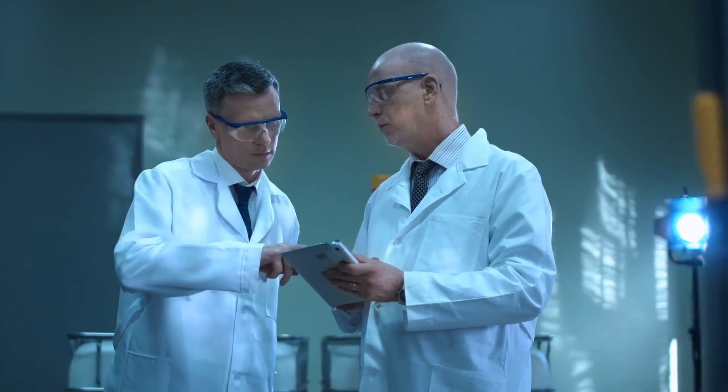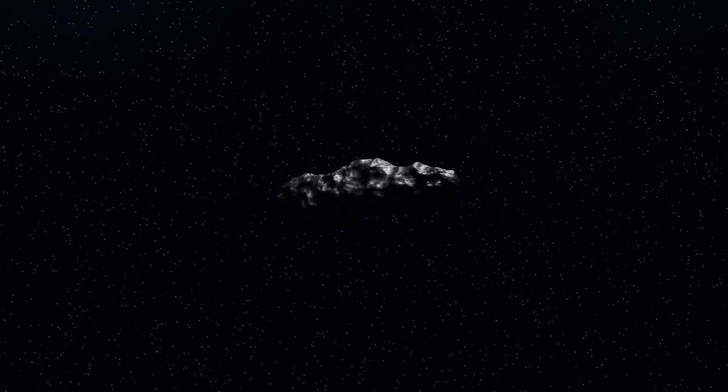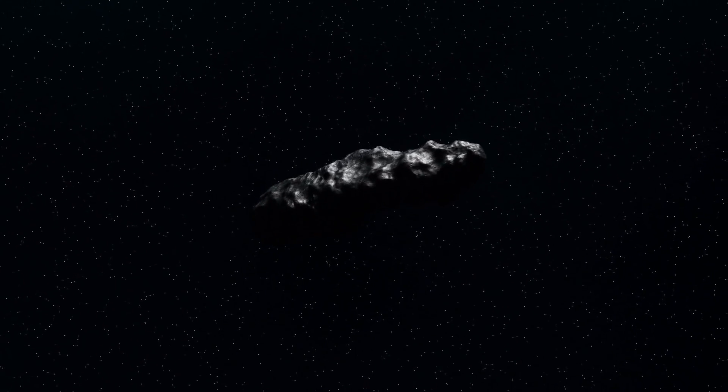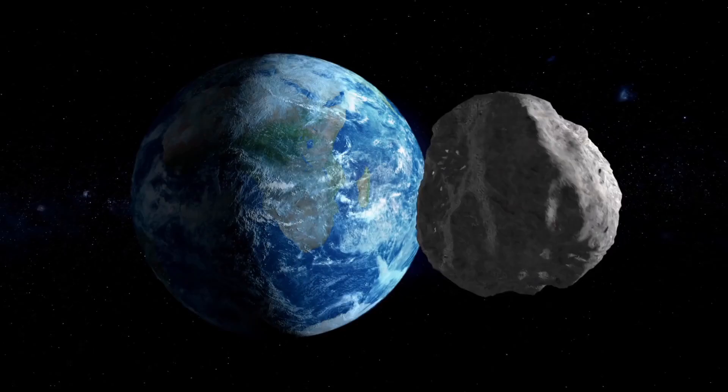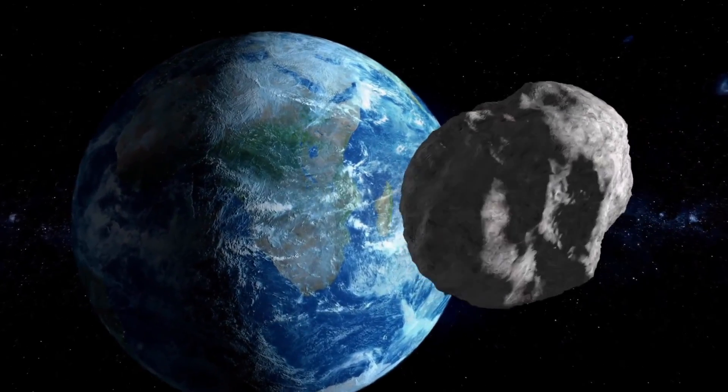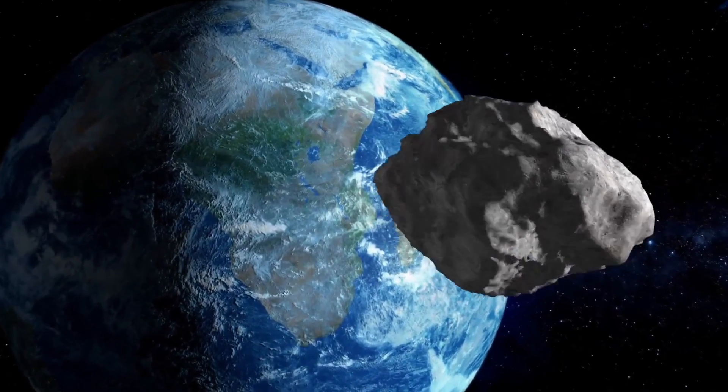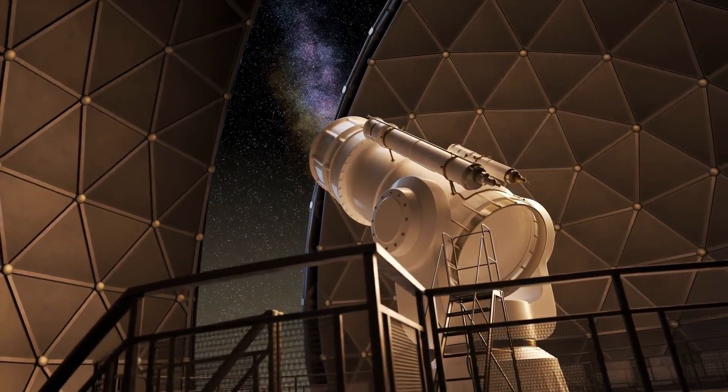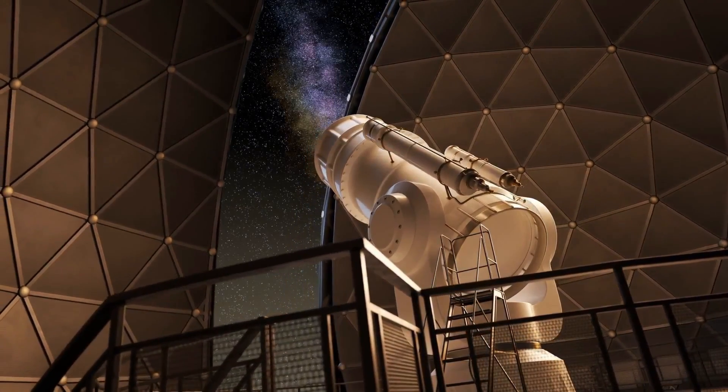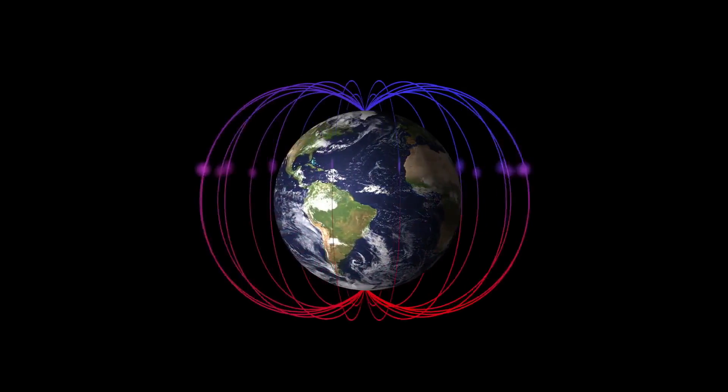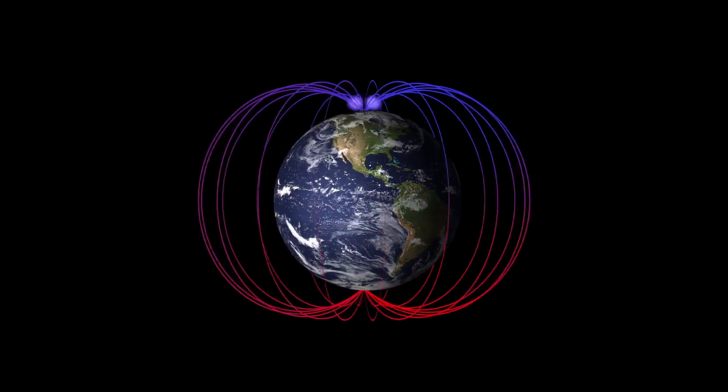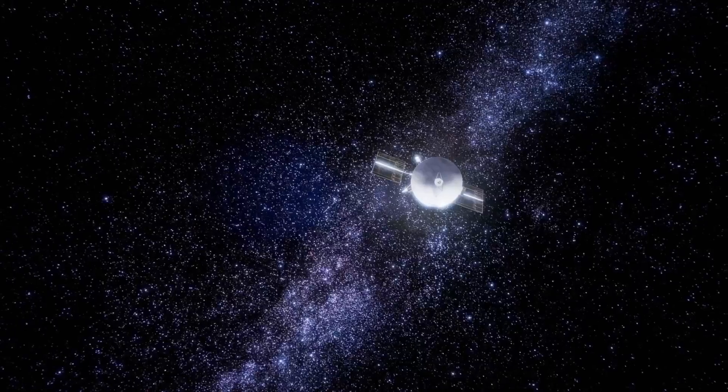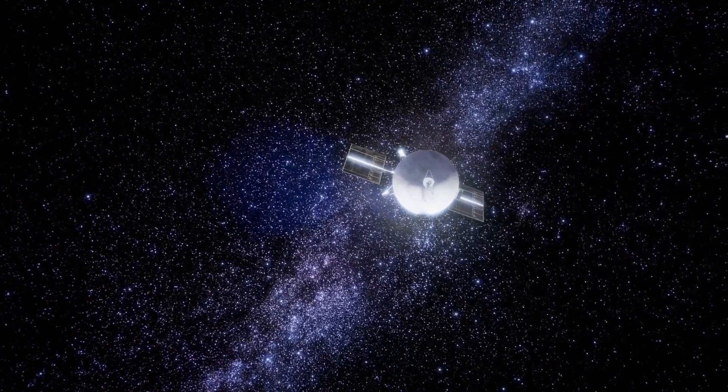In the broader picture, the story of 3i Atlas is one of cosmic exchange. Our solar system is not isolated. It exists in a sea of drifting debris from other stars. Most of the time, that material passes far away, unseen and unmeasured. But occasionally, as now, one of those wanderers crosses our path. To detect such an object at all is a testament to the precision of modern sky surveys. A century ago, 3i Atlas would have come and gone without a trace. Today, automated telescopes scan the heavens each night, capturing faint blips that tell stories billions of years in the making.